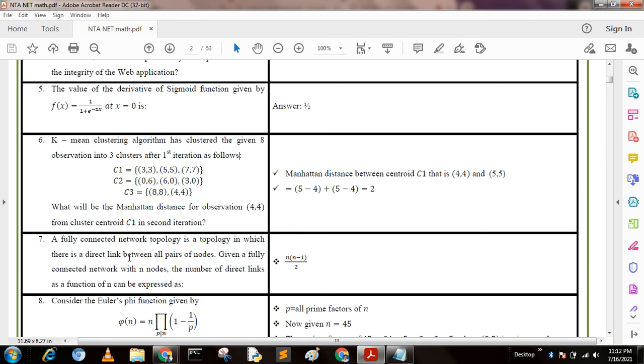Next question in the computer networks: A fully connected network topology is a topology in which there is a direct link between all pairs of nodes. Given a fully connected network with n nodes, the number of direct links as a function of n can be expressed as: from mesh topology, we know the formula is n(n-1)/2.